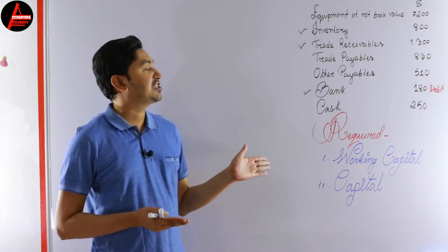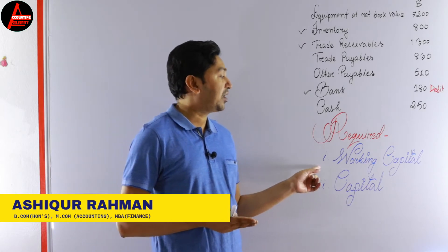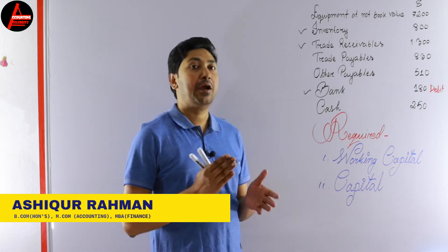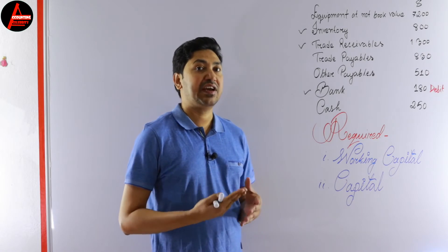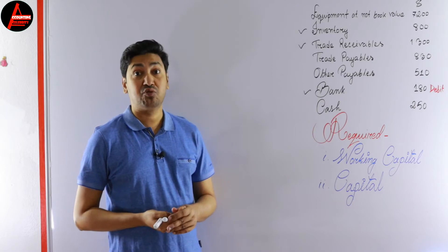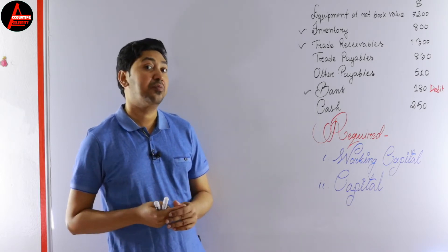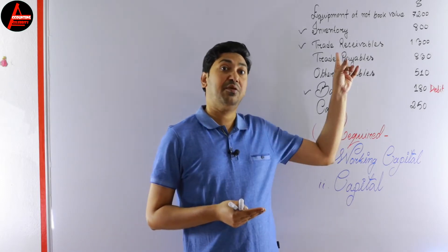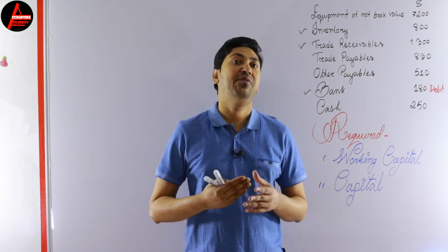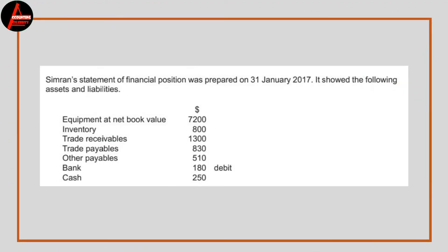Look at the question — we have two requirements. The first one is working capital, the second one is capital. In my previous video I already explained how to calculate working capital. If you did not watch that, I recommend you to watch it — I'll put the link in the i-button. Now have a look at the question on screen: Wallace Shimran's statement of financial position was prepared on 31st January 2017.